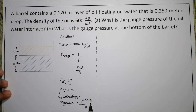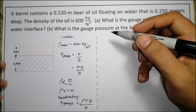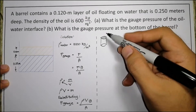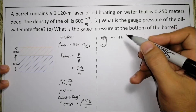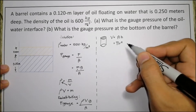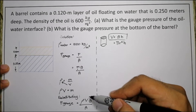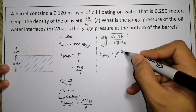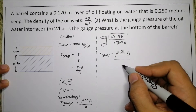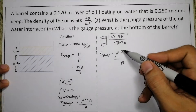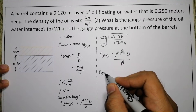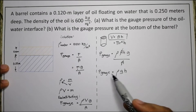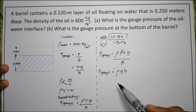Since the barrel is cylindrical, its volume equals the base area times height, which is π r² times height. Substituting this into the equation, the area cancels out, leaving us with gauge pressure equal to density times gravity times height — which is the formula we used in previous videos, and now we know where it comes from.